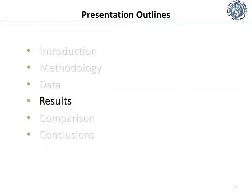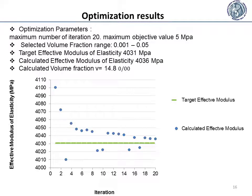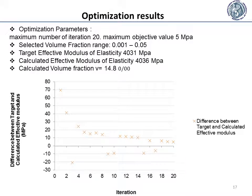Let's now turn to the results. In the present work, three cases of optimization were completed: first, a case with a maximum number of iterations of 20; second, a case with 200; and third, a case with 1000. This diagram displays the calculated effective modulus versus iteration. The optimization parameters for this case are 20 maximum iterations and 5 MPa maximum objective value. The final calculated volume fraction is 14.8 MPa and the calculated effective modulus is 4036 MPa. This diagram shows the difference between the calculated effective modulus and the target effective modulus versus iteration.